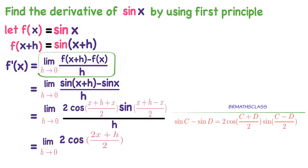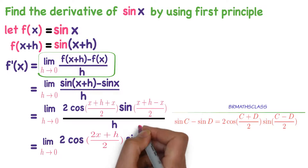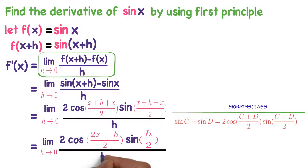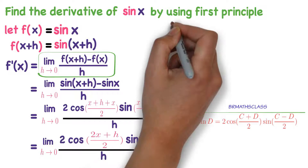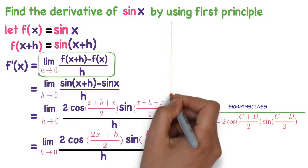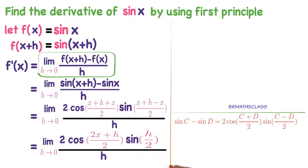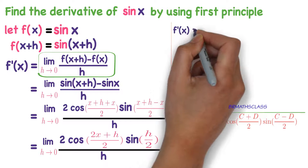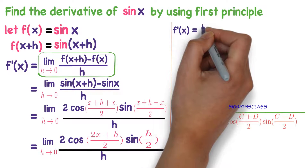Continuing from the previous step: limit h tends to 0 of 2 cos((2x+h)/2) times sin(h/2), all divided by h. You can observe that x+x gives 2x, and the x terms in the sine cancel to give h/2.